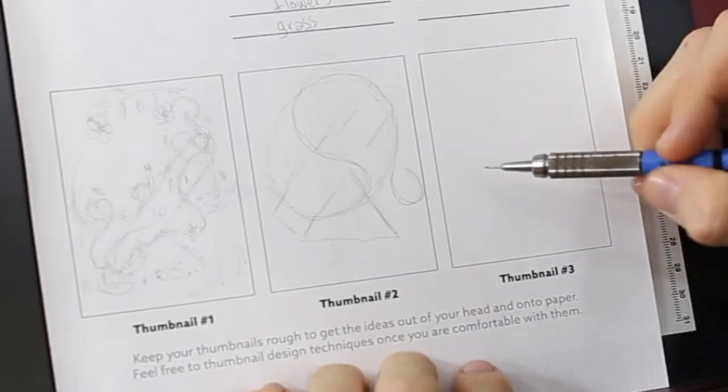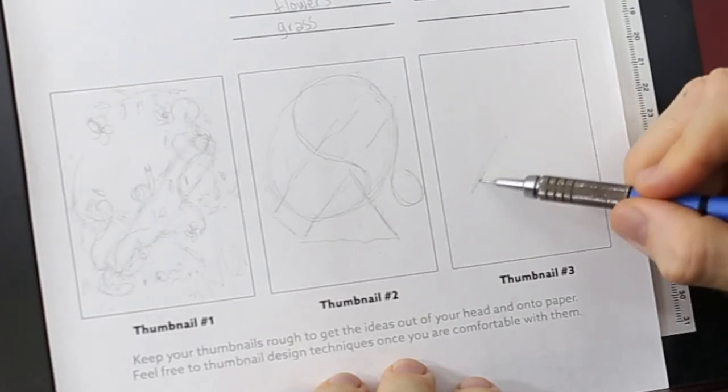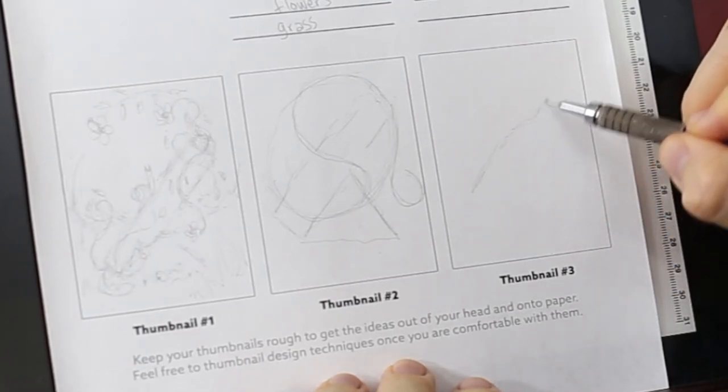This one we can maybe create—say you wanted to have a bottle instead of a log. So let's just do the same kind of composition but have a bottle there. We'll have the bottle on a Baroque diagonal.